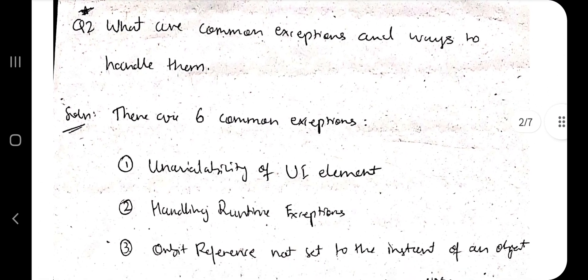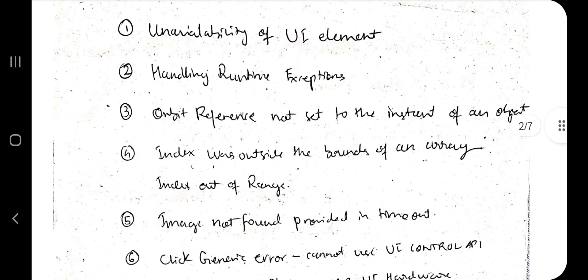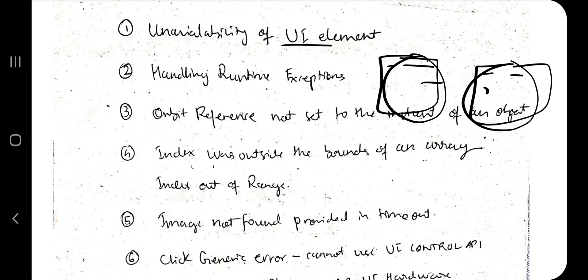Next is what are the common exceptions and the ways to handle them. There are six common exceptions. Namely, unavailability of UI element. If you have a UI element, you have to open something in notepad and you have saved by some name and you have opened another notepad and saved something by another name, but the element is same. It is notepad only, but these two will be considered differently by the system.